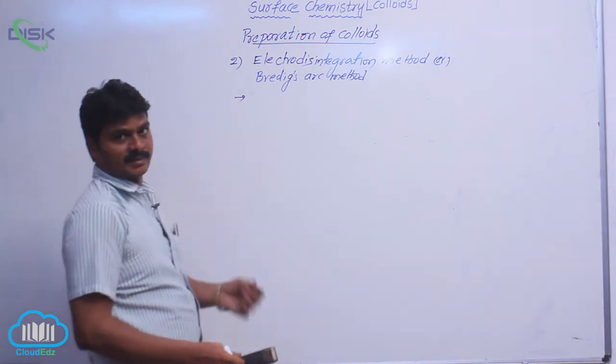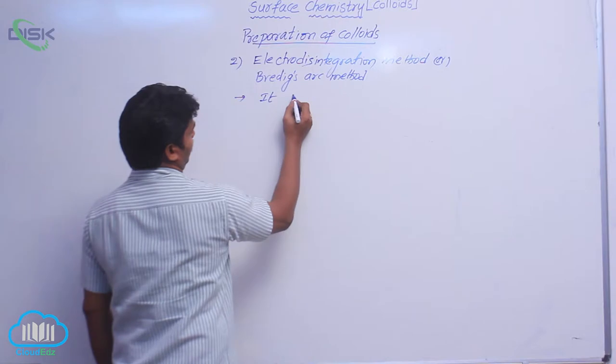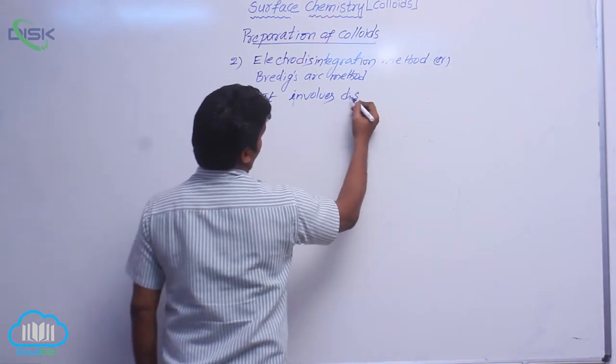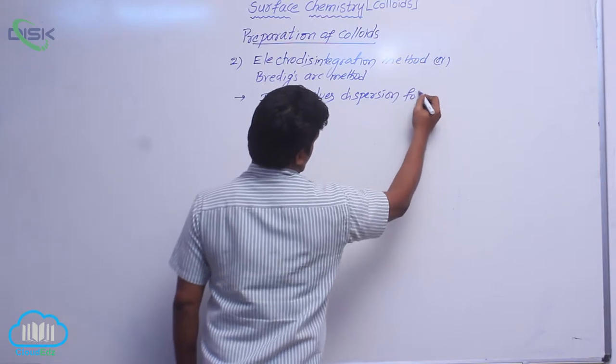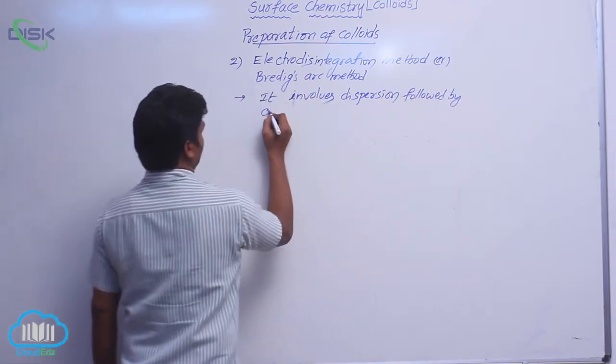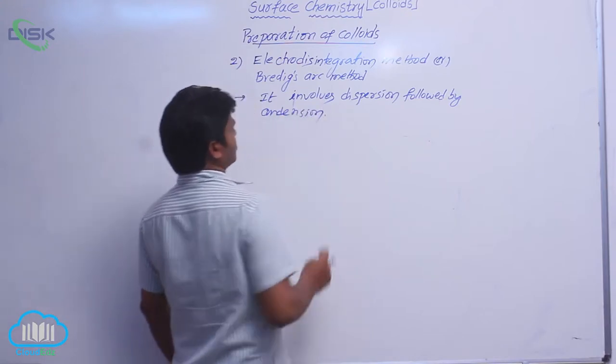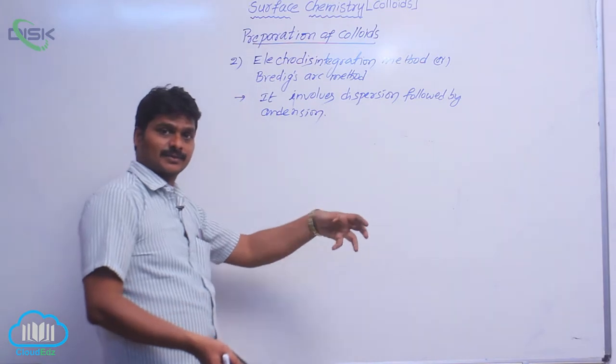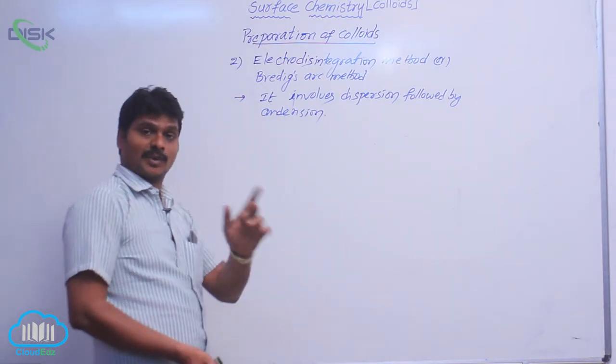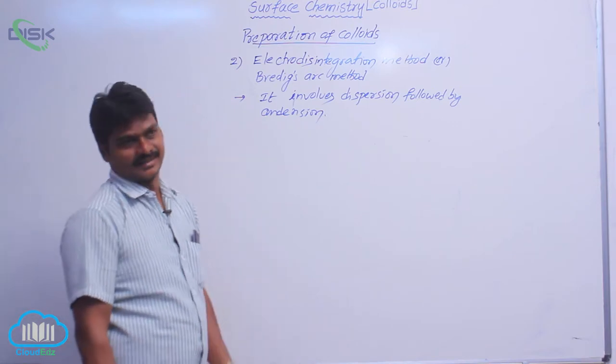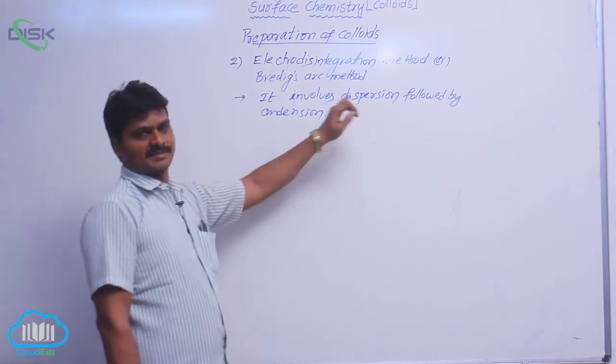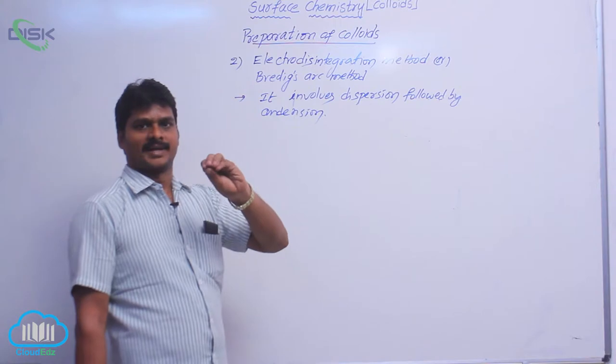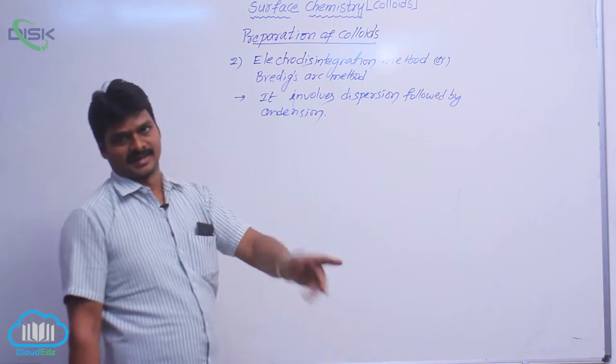In this Bradick's arc method, it involves dispersion followed by condensation. That means, first the bigger particles are dispersed and then disintegrated to smaller particles. Later these smaller particles are aggregated to somewhat bigger particles. It involves both dispersion and condensation. Dispersion means breaking of bigger particles into smaller. Condensation means forming of bigger molecules from smaller particles.